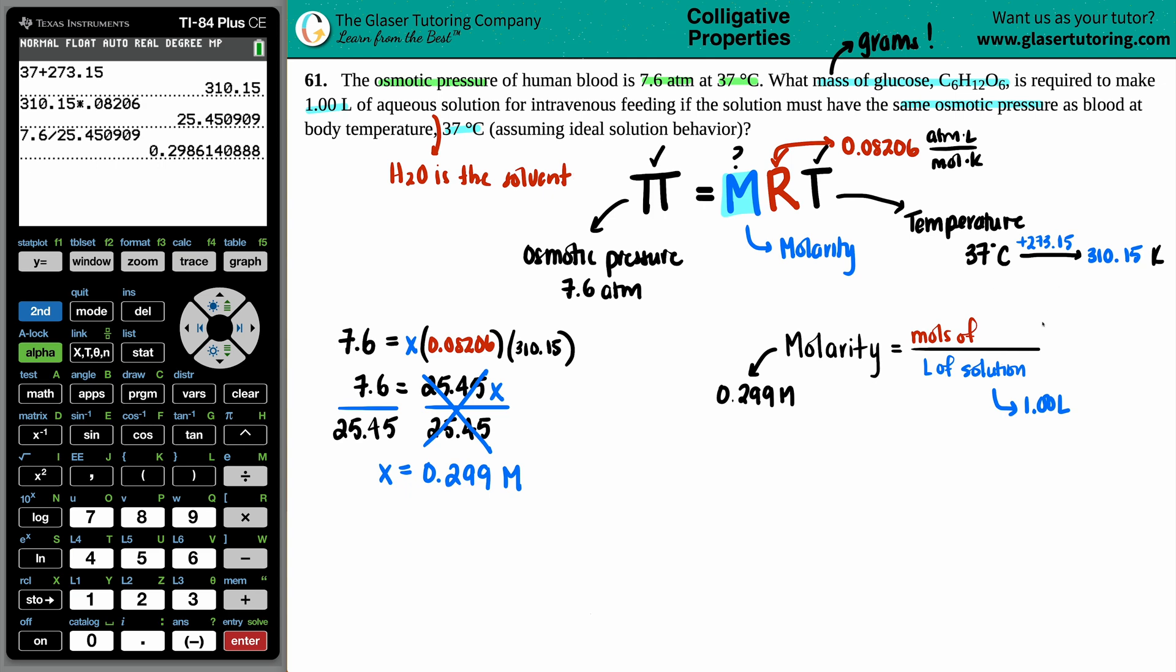But we're getting closer because can we convert moles into grams? Of course we can. This specific moles of solute - the solute is what you put into your solvent. In this case, the glucose is going to be what you are putting into water. It's an aqueous solution. Anytime you see aqueous, that means H2O is the solvent. So the glucose, C6H12O6, will be the solute.